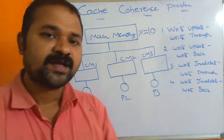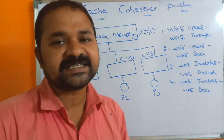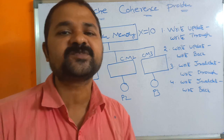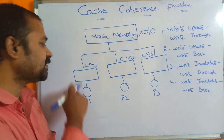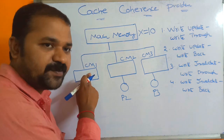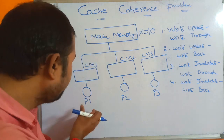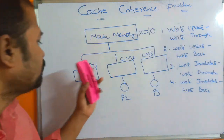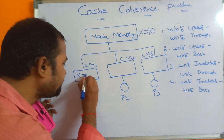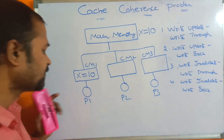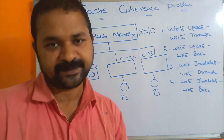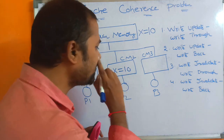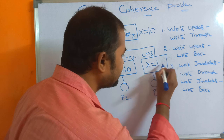Whenever a processor wants to access a variable or a program, first it checks whether it is present in cache memory or not. Unfortunately, here X is not available in cache memory 1. So P1 will fetch that variable from the main memory and load it into the cache memory. Now processor P1's cache memory contains variable X with value 10. Likewise, P2 and P3 also access X and load it into their cache memories.